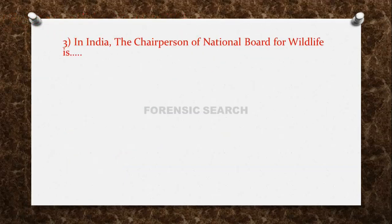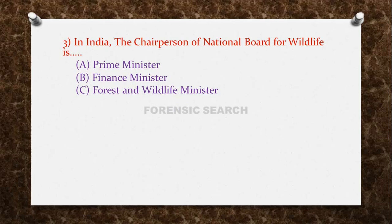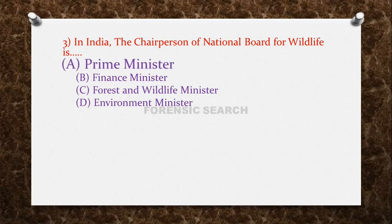Question 3: In India, the chairperson of the National Board for Wildlife is — Option A: Prime Minister, Option B: Finance Minister, Option C: Forest and Wildlife Minister, Option D: Environment Minister. The correct answer is Option A — the Prime Minister is the chairperson of the National Board for Wildlife, and the Forest and Wildlife Minister is the vice-chairperson.